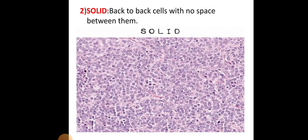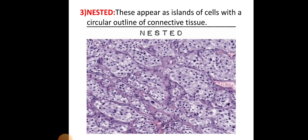The solid pattern is where back-to-back cells are arranged with no intervening space. The nested pattern appears as islands of cells with a circular outline of connective tissue.